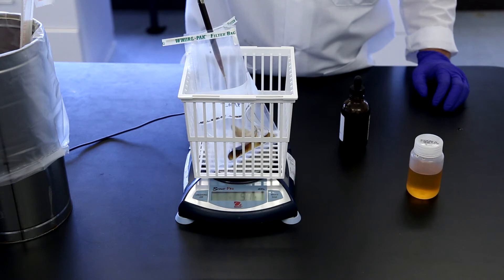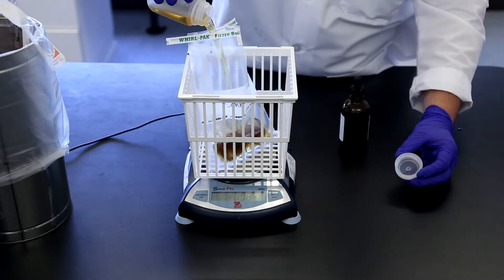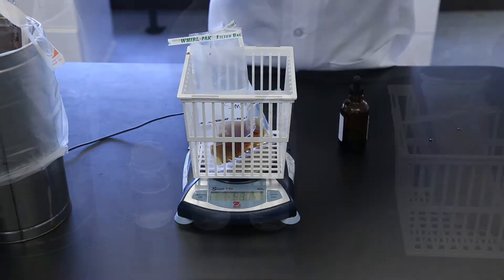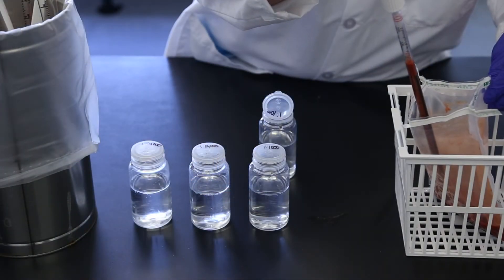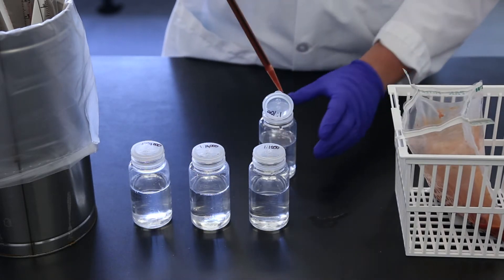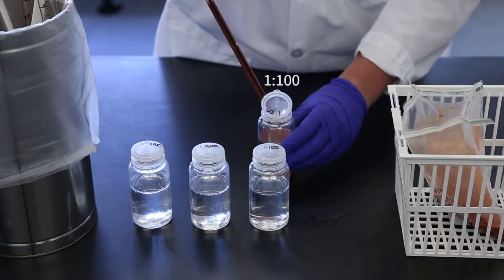For less than 10 CFU per gram, use a 1 to 10 sample dilution. For less than 100 CFU per gram, transfer 11 milliliters of a 1 to 10 sample into 99 milliliters of buffer.